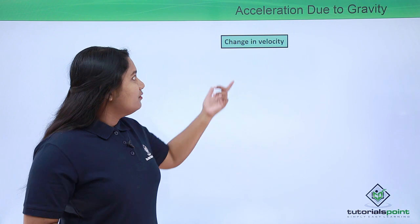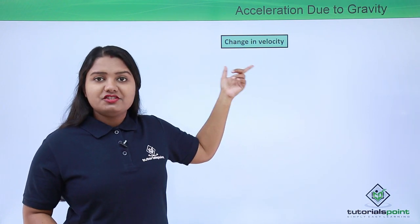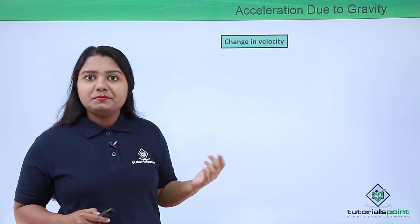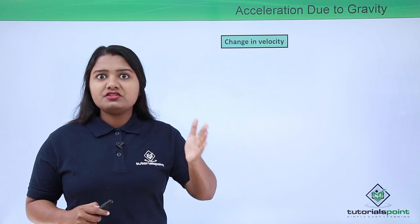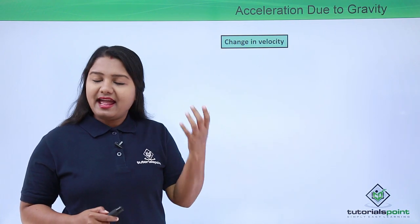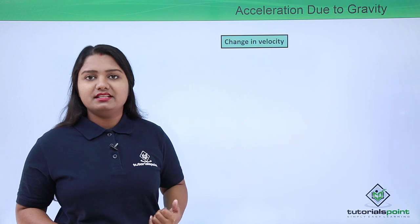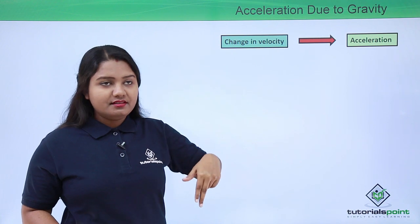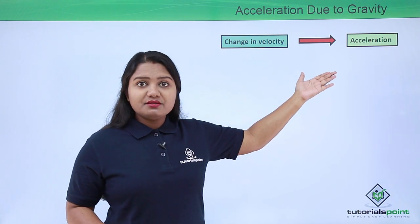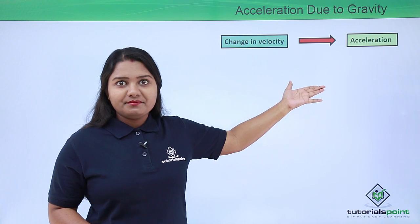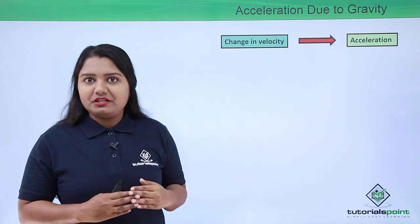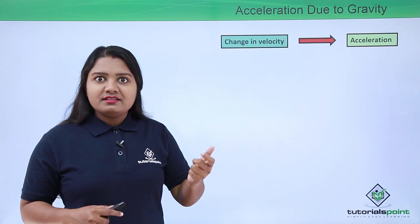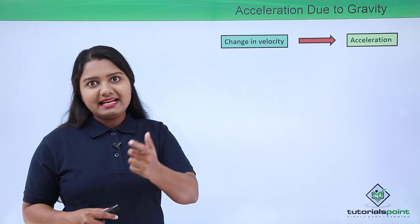Whenever we come across a change in velocity, the change in velocity is always accompanied by acceleration. This means that whenever a body is undergoing a change in velocity, we say that the body is accelerating with a particular acceleration. So this body moving down to the surface of the Earth has a particular acceleration with which it was moving.